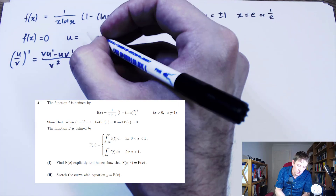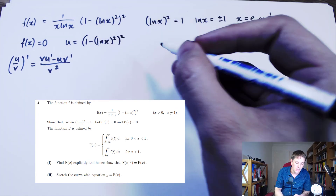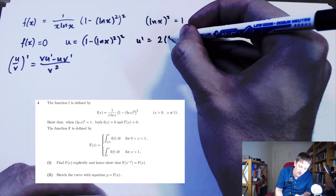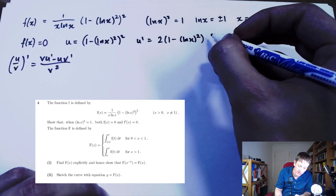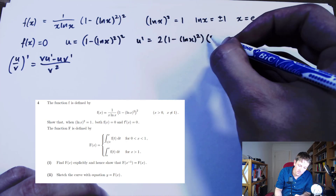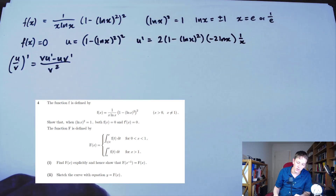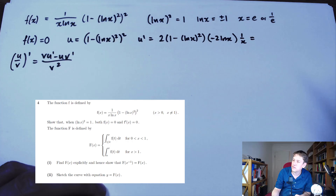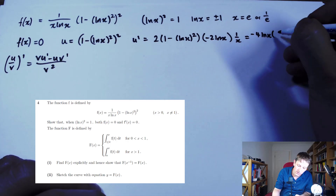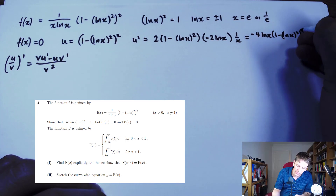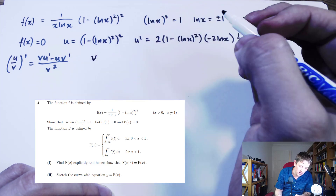If I take u to be (1 − log²x)², then I apply the chain rule to get 2(1 − log²x), and then multiply by the derivative of the inside function: that's −2·log x, and again by the chain rule multiplied by the derivative of log x, which is 1/x. So u' simplifies to −4·log x·(1 − log²x) / x. It's a bit involved but you should manage it reasonably quickly with practice.